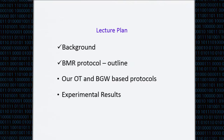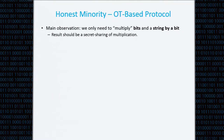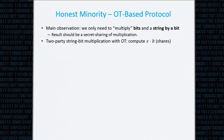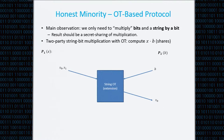Now I'll go over our OT-based protocol for the offline phase. The main observation is that we only need to multiply bits by bits and to multiply a string by a bit — where multiply means the result should be a secret sharing of the multiplication. In the two-party situation, to compute the multiplication of a string X times a bit B: party P1 has the string X, party P2 has the bit B. We have an oblivious transfer black box where P1 gives two strings X0 and X1, P2 gives the bit B and receives back the string XB.